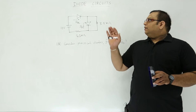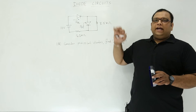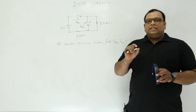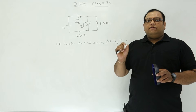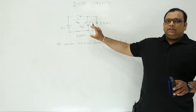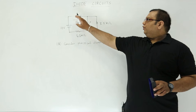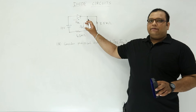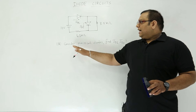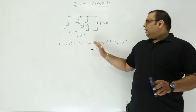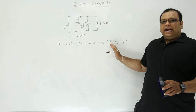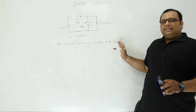Let us discuss problems on the diode circuit based on the small signal equivalent of diode. Here we have a question with a diode circuit which has two diodes and resistances. The question is: consider practical diodes and find ID1 as well as ID2.